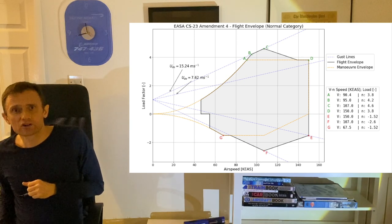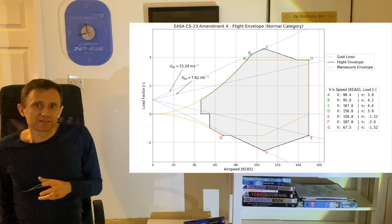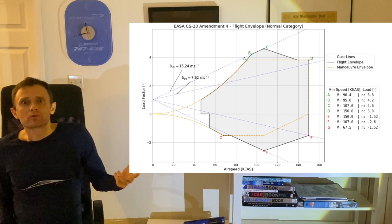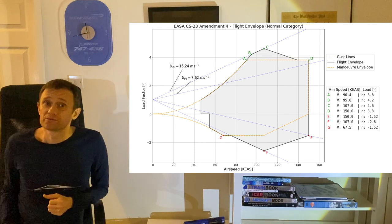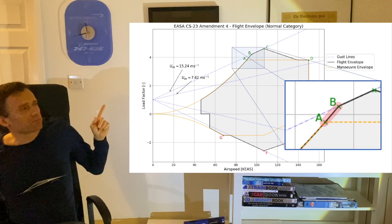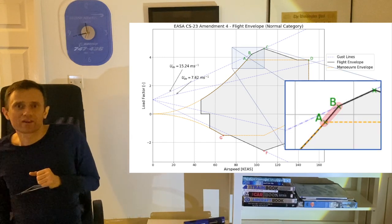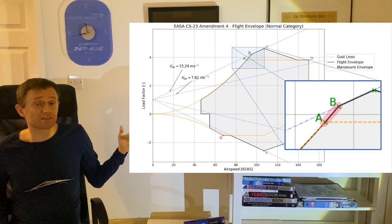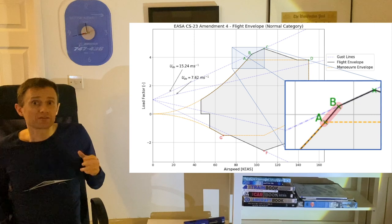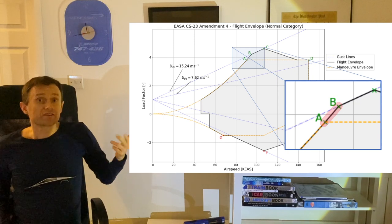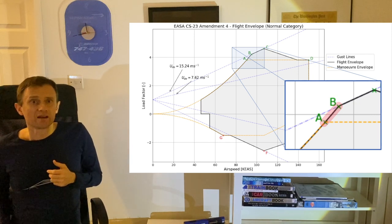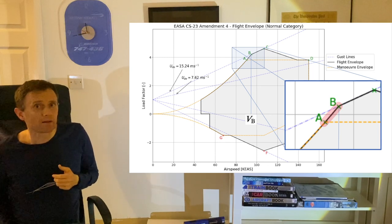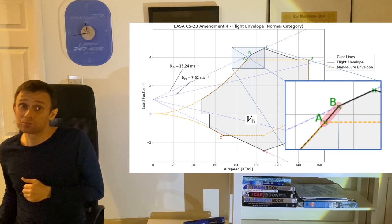ADRPy does all this construction work automatically, but if you're drawing your own diagram or writing your own code, you may wish to look out for a few gotchas. An example is the tricky point around A, where if the 50 foot per second gust line does not intersect the stall curve, you have to extend the latter until it does. The abscissa of the intersection point is VB, also known as the maximum gust intensity speed.